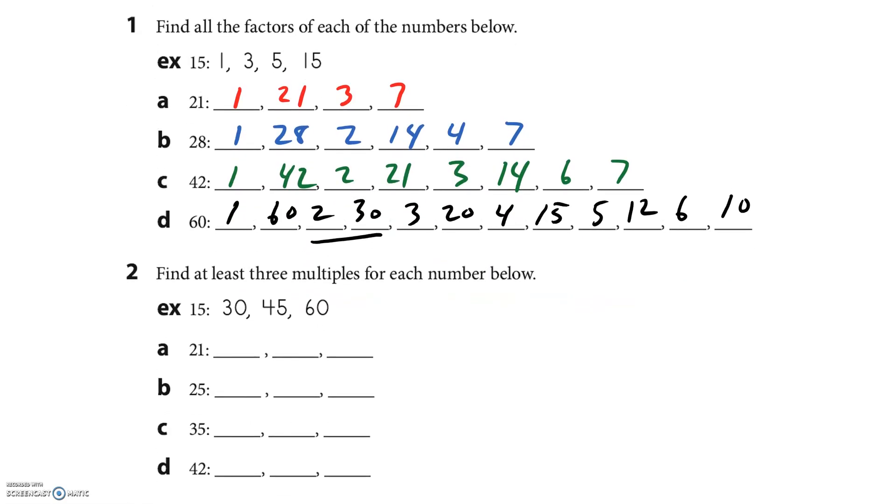Find at least three multiples of each number. Oh, excuse me - not the first 3, at least 3. Because 30 is not the first multiple of 15 - 15 is. So we can be a little easy on ourselves. The first multiple is the number, right? For 21: 21 times 2 is 42, and then if I add 21, or 21 times 3, that's 63.